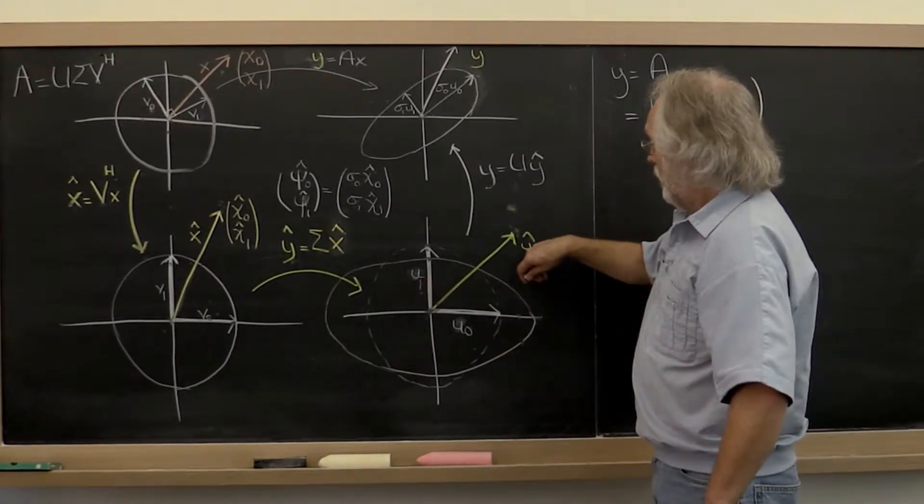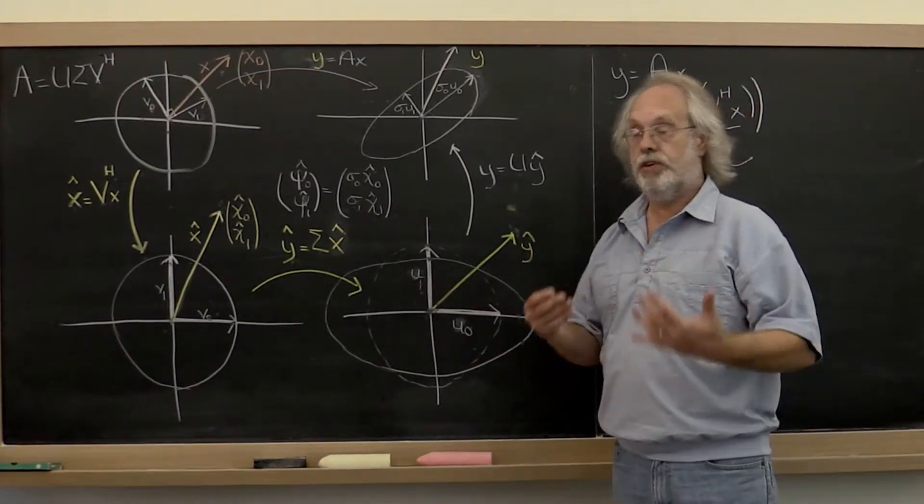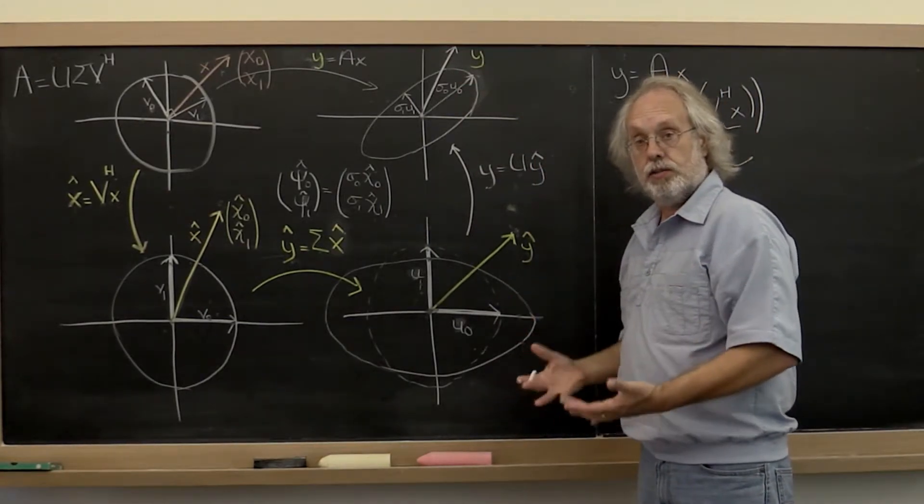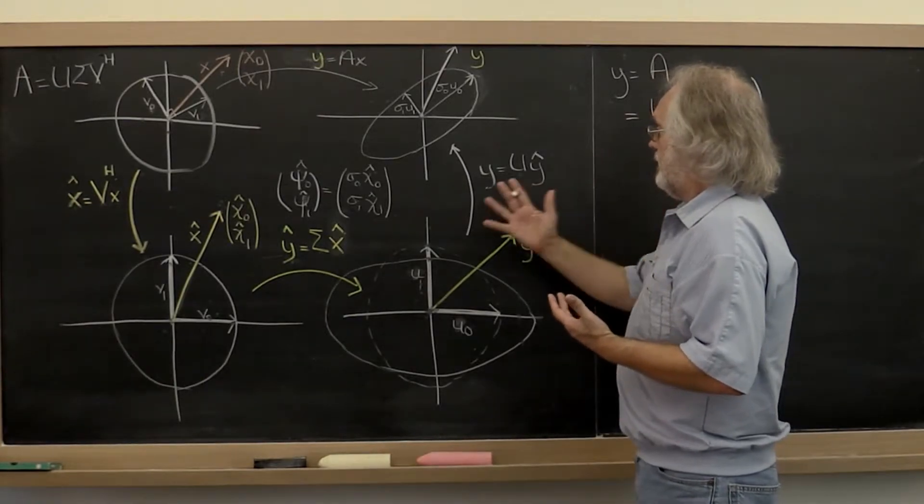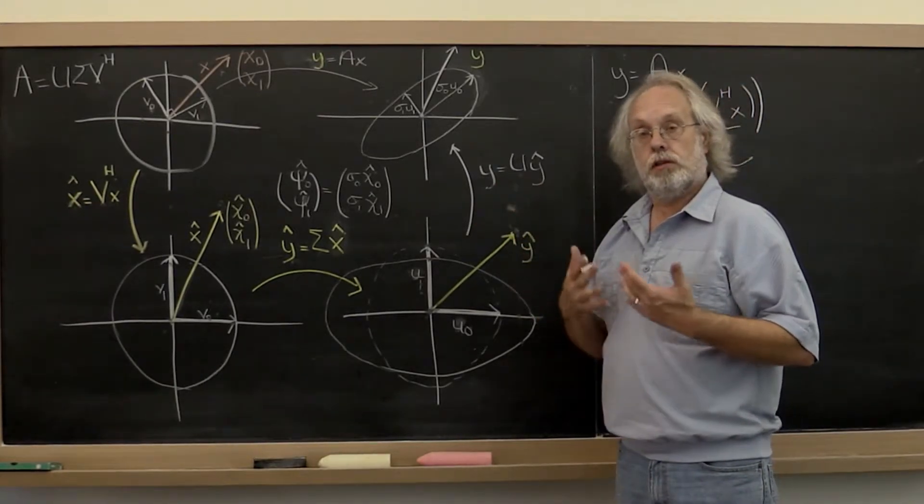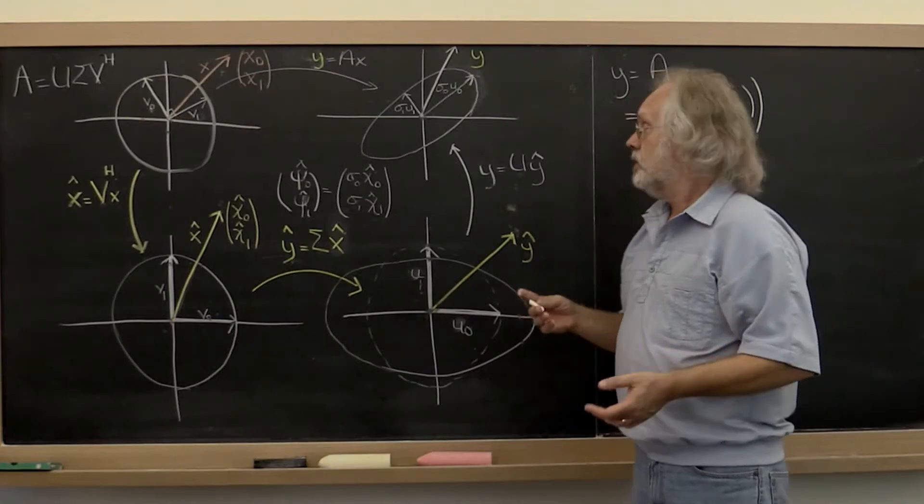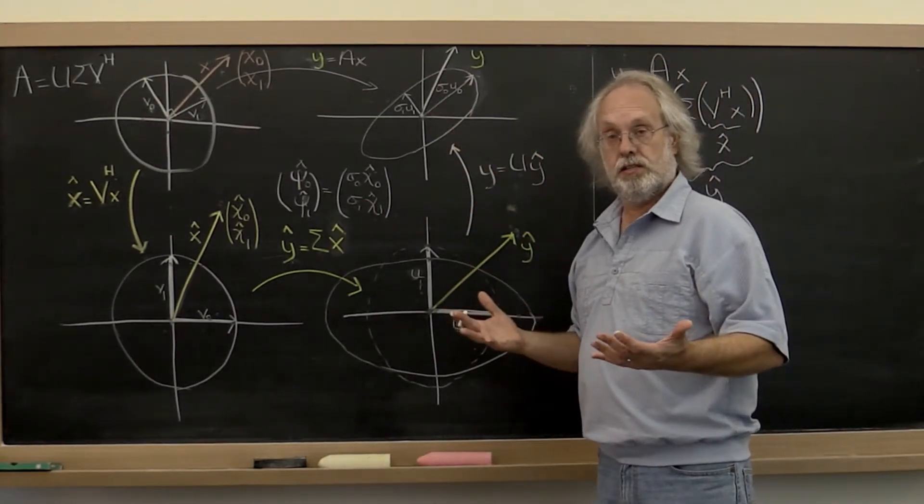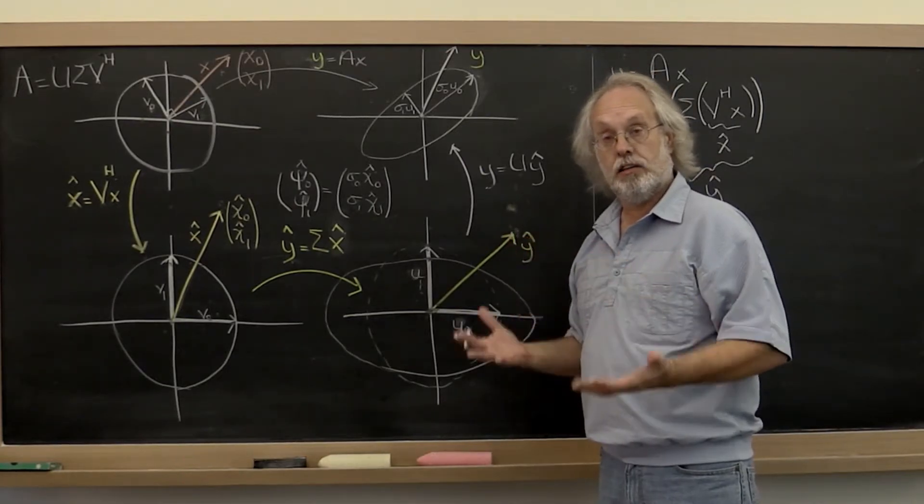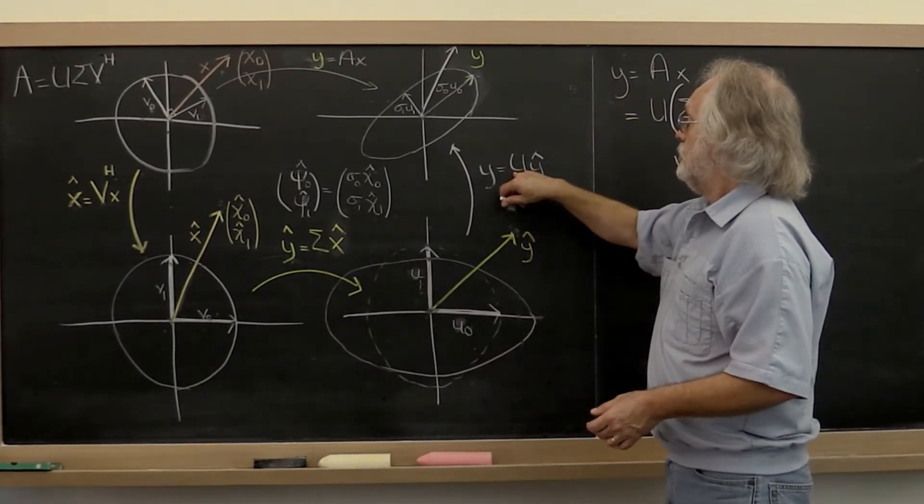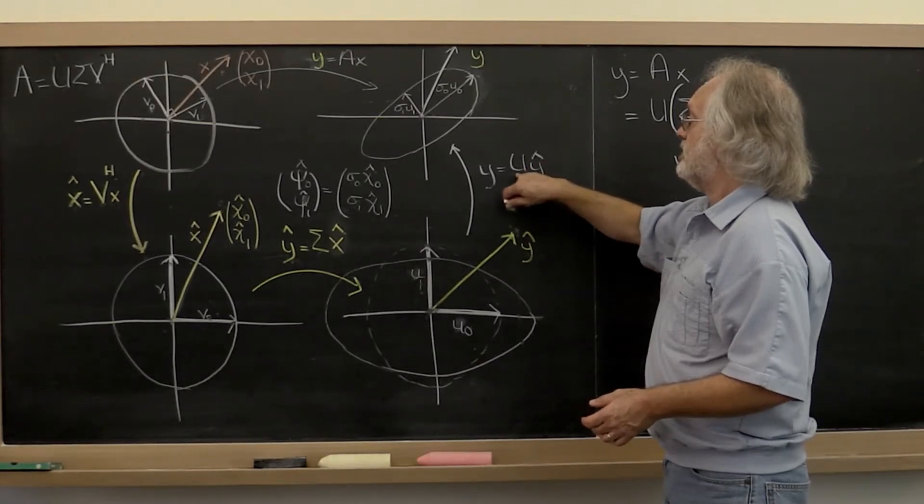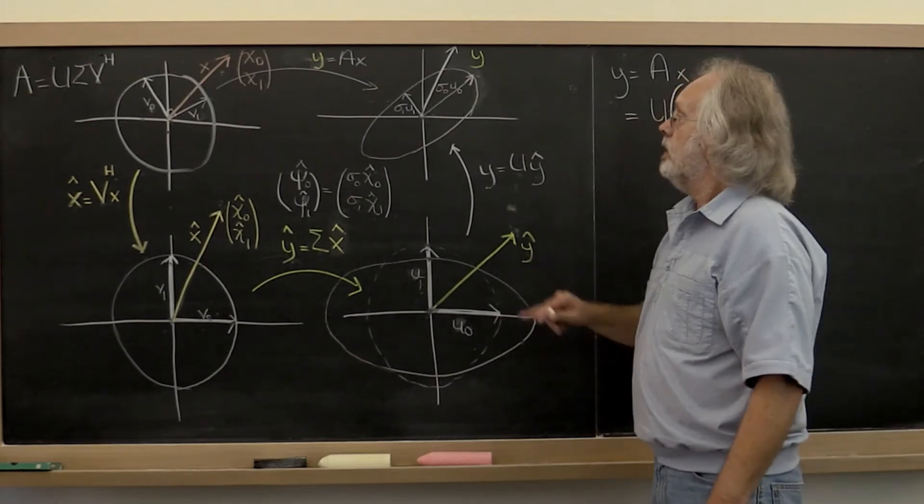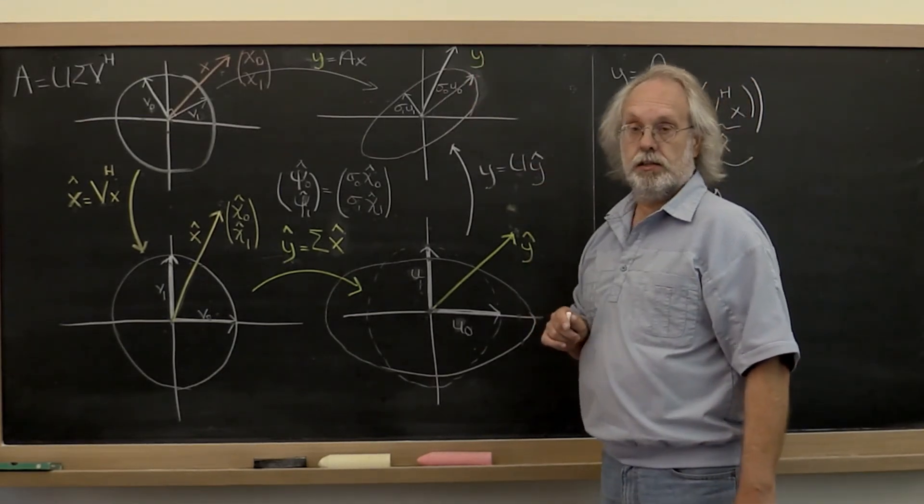Okay, so now this here gives us the coefficients for our final result, but with respect to the orthonormal basis that you find as the columns of matrix U. So to now express it in terms of the orthonormal basis that consists of the standard basis vectors, all we need to do is U times y hat because that takes the appropriate linear combination of the columns of U and we get our final result vector y.